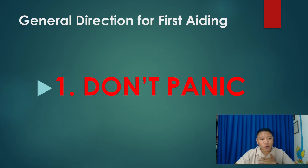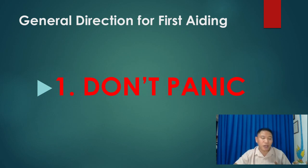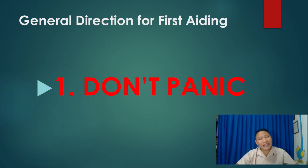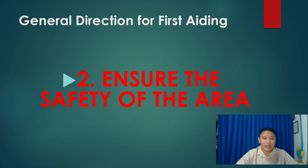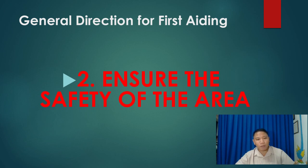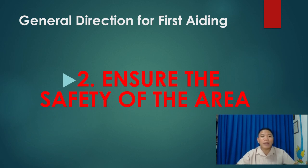Assess yourself — do I really know this, am I trained to do this? You cannot make a mistake when dealing with life. There is no second life. Next, ensure the safety of the area — survey the scene. Am I safe? Am I safe going in to help? There may still be shooting, unexploded bombs, or incoming vehicles. If possible, move the victim to the side of the road. Cordon the area using a cordon belt to assure the safety of the scene.